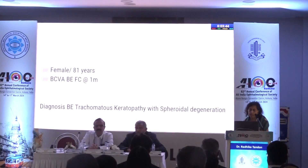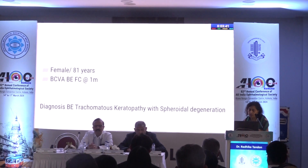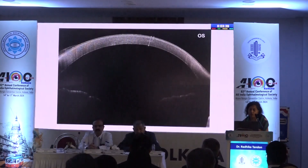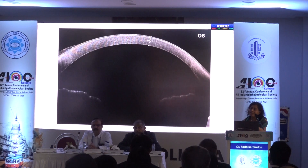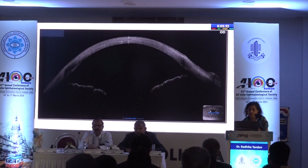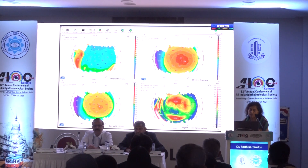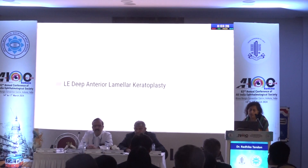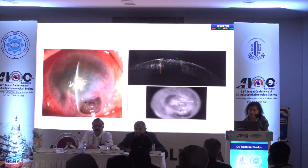This is another case — an 81-year-old who had finger counting vision in both eyes, with trachomatous keratopathy and spheroidal degeneration. This is a little different from the previous case: the diagnosis was similar, but the appearance is quite different. Looking at the map, the surgery was again planned as a deep anterior lamellar keratoplasty.